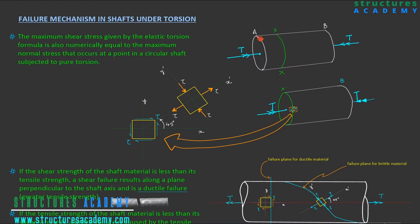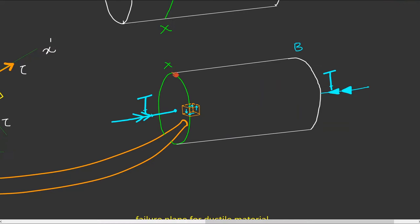Consider a shaft AB subjected to pure torsional loading with torque T. Let us consider an arbitrary section X and isolate portion XB. With external torque T acting at end B, in order to maintain equilibrium of this portion of the shaft, section X will come up with a stress resultant numerically equal to the external torque and opposite in direction.